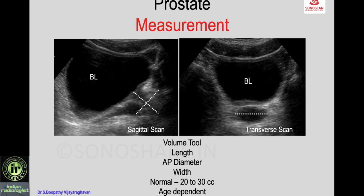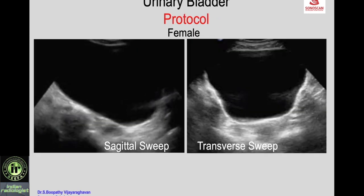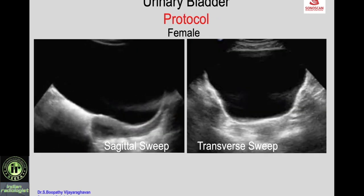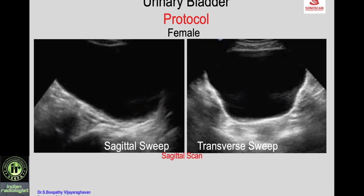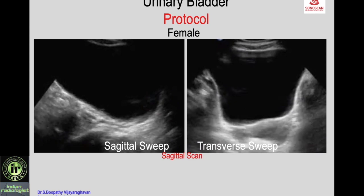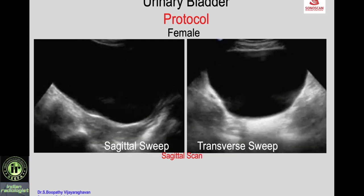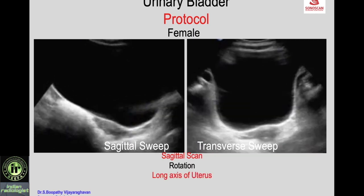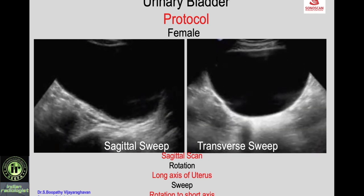When you want to study the prostate and seminal vesicles in detail, it must be by transrectal ultrasound. In the female, the sagittal sweep from side to side shows the bladder and uterus, and the transverse sweep from above downwards shows the bladder, uterus, and ovaries. That is how you scan the entire volume of the bladder in a female.